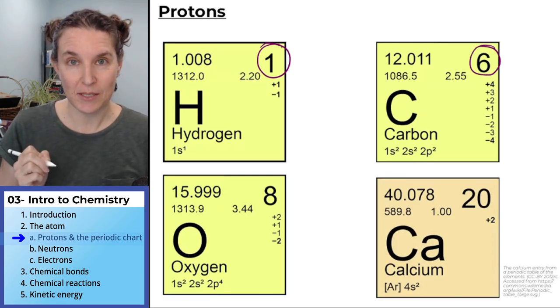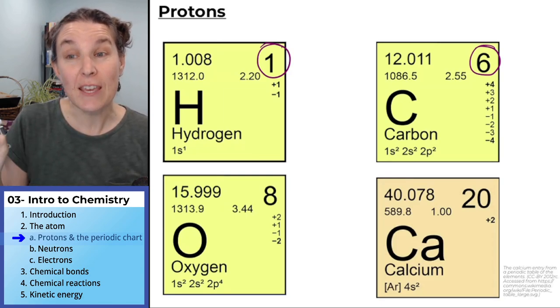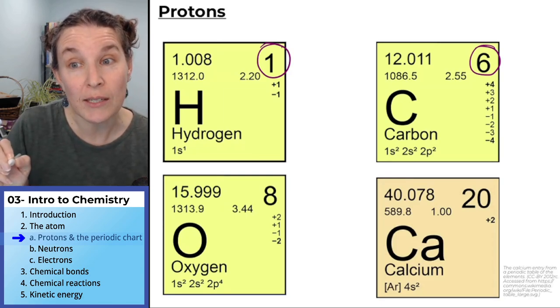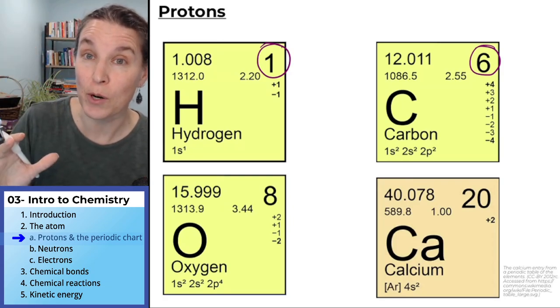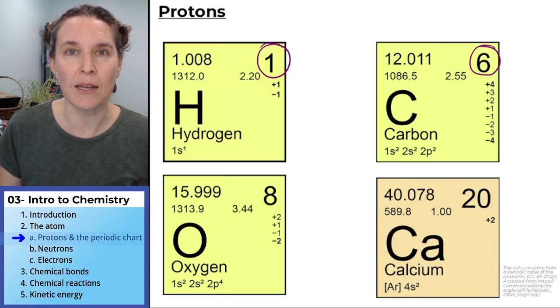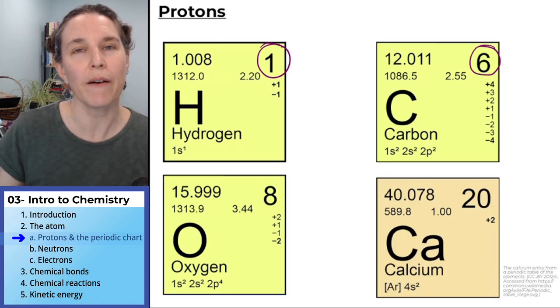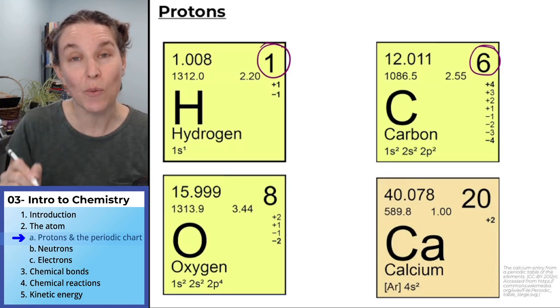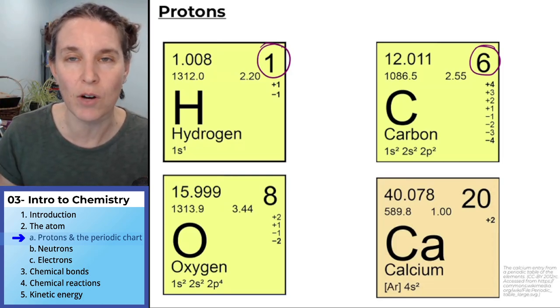Carbon atoms all have six protons. If you take away a proton, the atom now has five protons. It's a whole new element. I'm going to look at the periodic chart because I can't remember what it is. It's boron. If you take away a proton, you have five protons and now you have boron. You don't have carbon anymore.